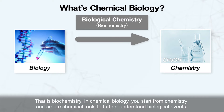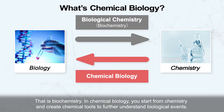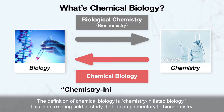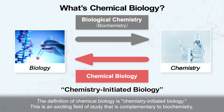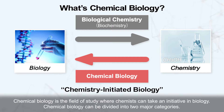In chemical biology, you start from chemistry and create chemical tools to further understand biological events. The definition of chemical biology is chemistry-initiated biology. This is an exciting field of study that is complementary to biochemistry. Chemical biology is the field of study where chemists can take an initiative in biology.